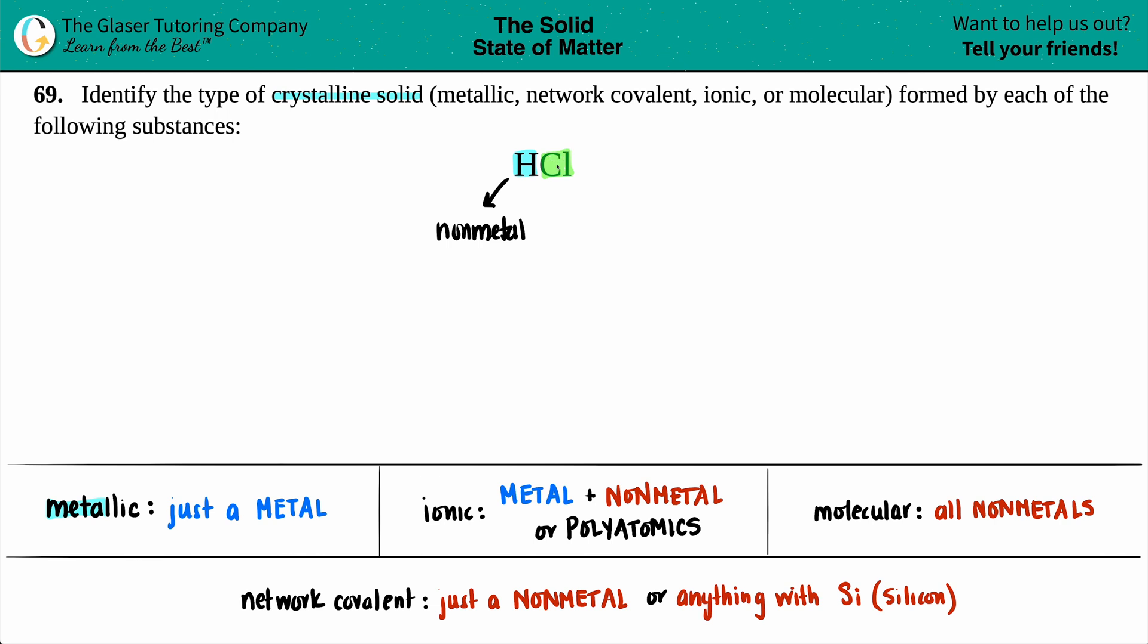And chlorine, group 7A or 17, depending on what your periodic table says, it's also a non-metal. So there are no metals in HCl, so it can't possibly be a metallic crystalline solid.